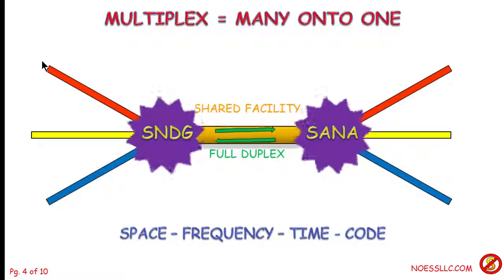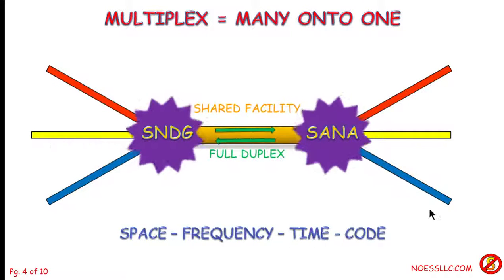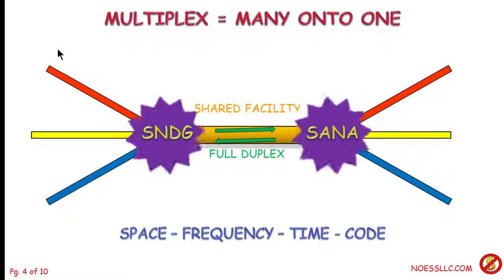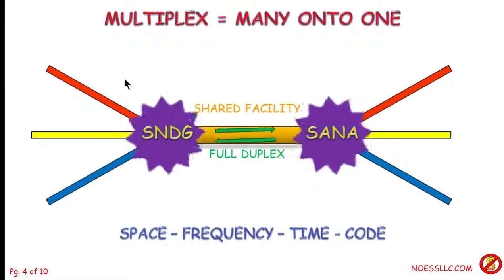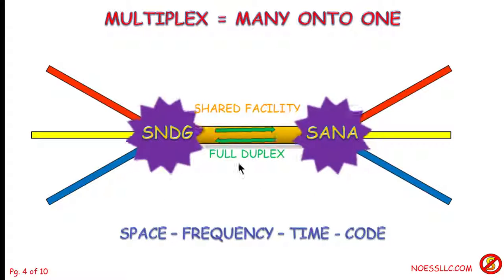I could have just run wire from a customer in San Diego up to Santa Ana — it's only about a hundred miles — but that wouldn't be very efficient, because I'd have to have a pair of wires for the red, a pair for the yellow, a pair for the blue, and just keep going on and on. So by going to a shared facility running full duplex — meaning this guy can talk to that guy simultaneously — it's a lot cheaper to have one common facility carrying multiple transmissions, sharing the cost.